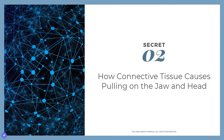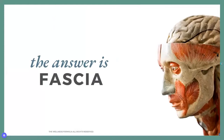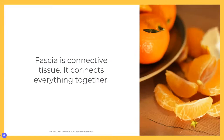Moving on to secret number two: how connective tissue causes pulling on the jaw and on the head. What I'm really talking about here is connective tissue called fascia. You may have heard of it — it's spoken about a lot in the yoga world. Fascia is connective tissue that connects everything together. It's actually what we're made from when we're an embryo and what develops into the body as we grow. Fascia connects muscles to tendons, bones, and ligaments, and it runs around our organs, including our brains.